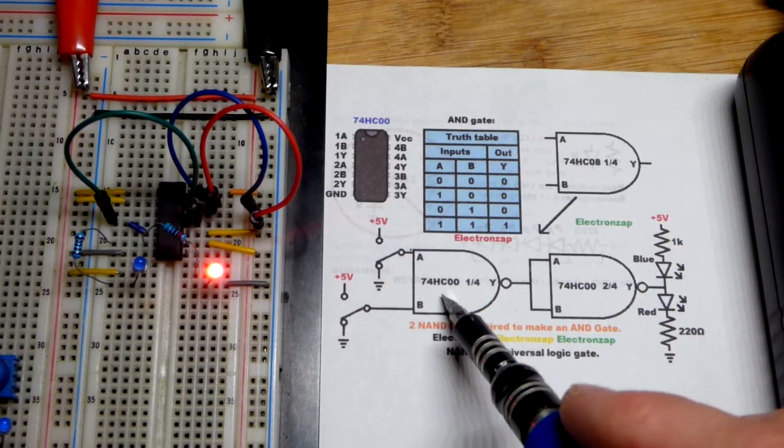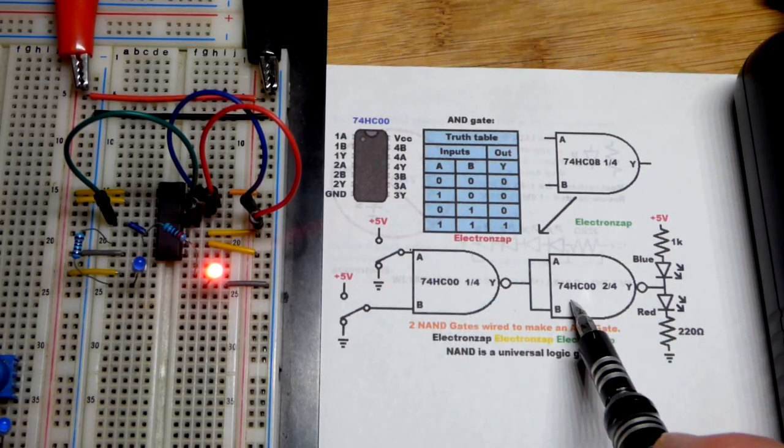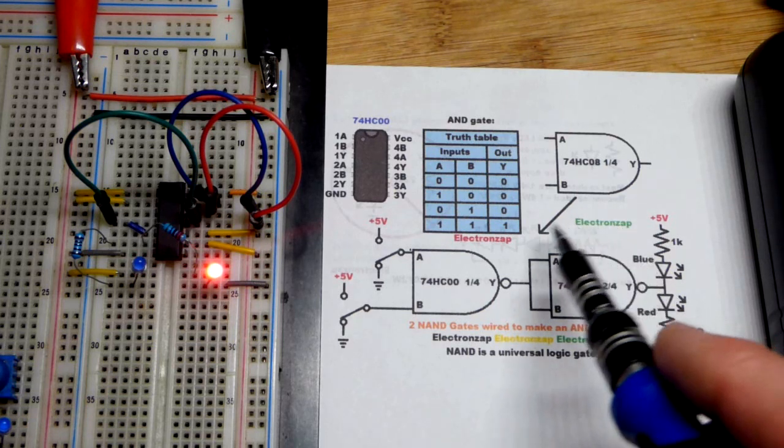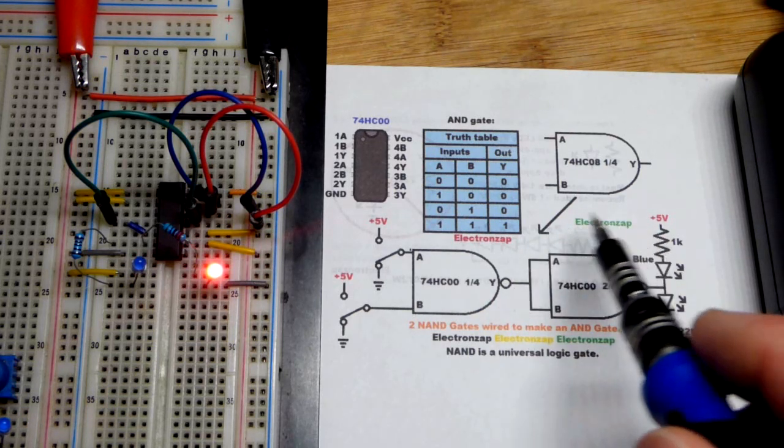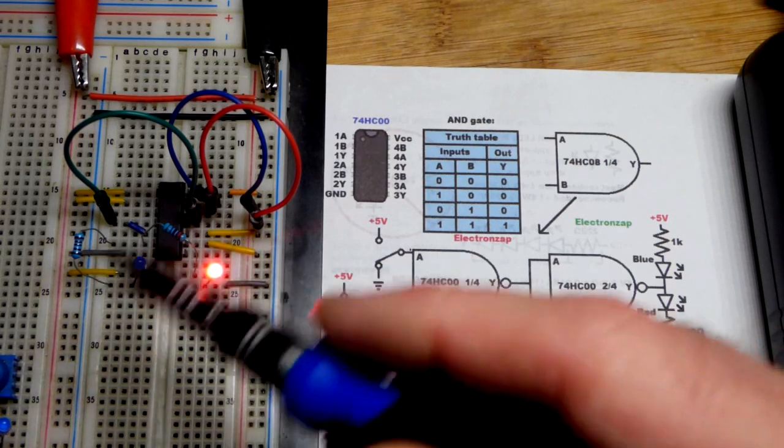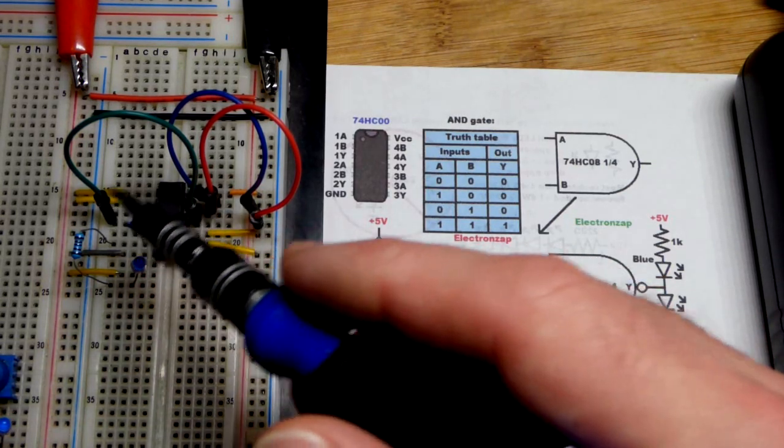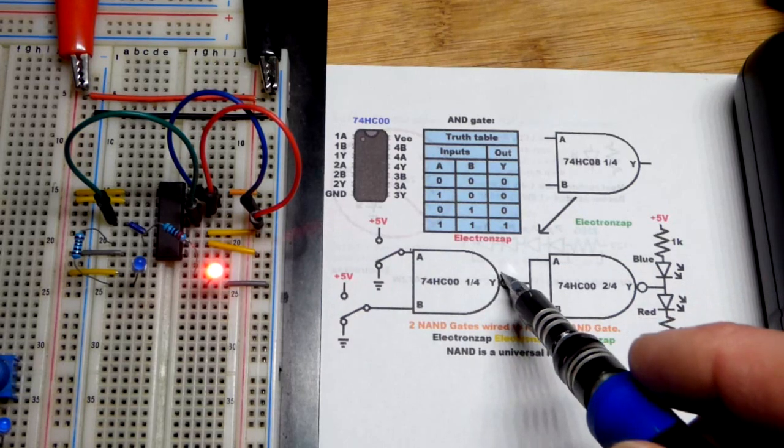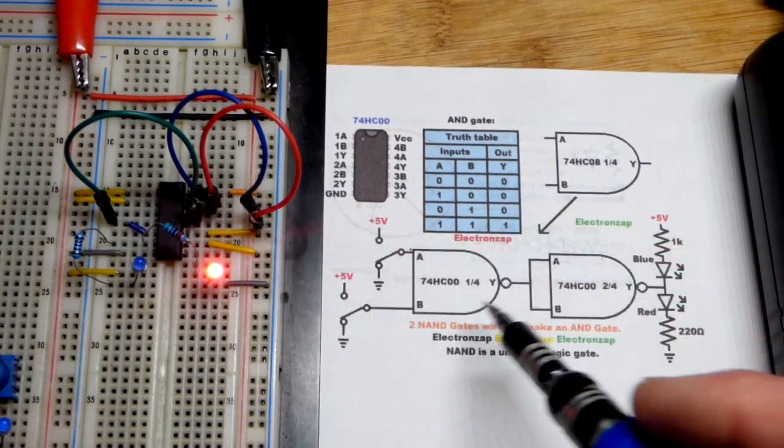So now in this video we're going to use the NAND logic gate to make a different logic gate again. Last video we made an inverter or NOT gate out of a NAND logic gate by tying together the inputs. So that circuitry is still there as is, other than now I moved the jumper to the output of a different NAND gate up here.